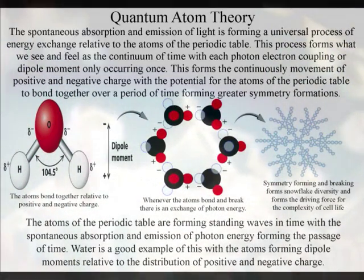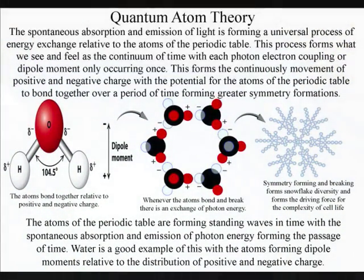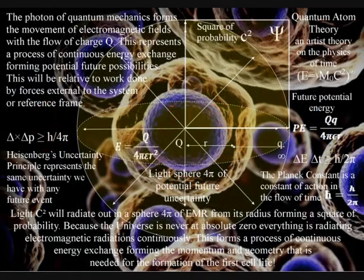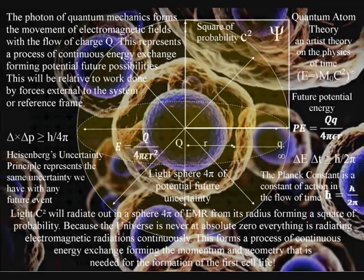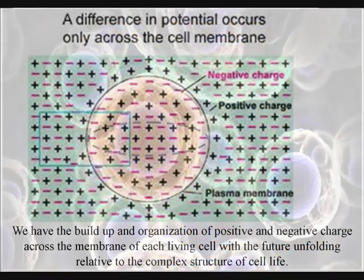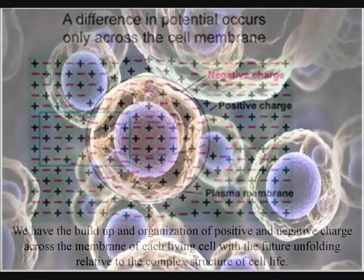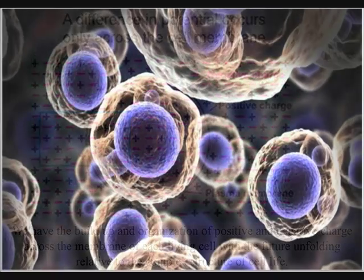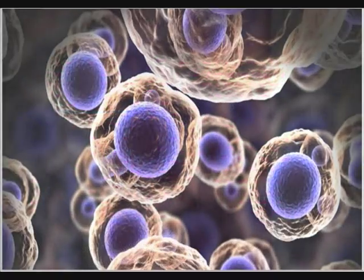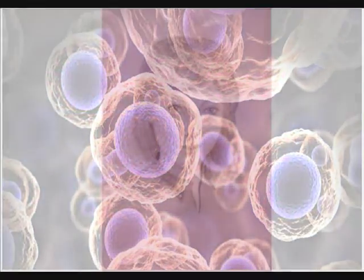This is a universal process. It is the same with cell life, with charge building up and photon energy being exchanged across the membrane of each cell relative to the structure of the cell. One of the main effects this process of energy exchange has on us is the aging process.